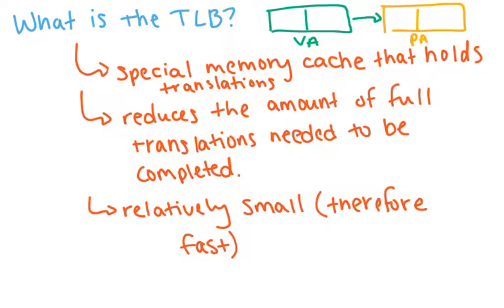So what is the TLB? The TLB is a special memory cache that holds translations. It holds the most recent translations that have happened from virtual address to physical address. This will reduce the amount of full translations needed to be completed.